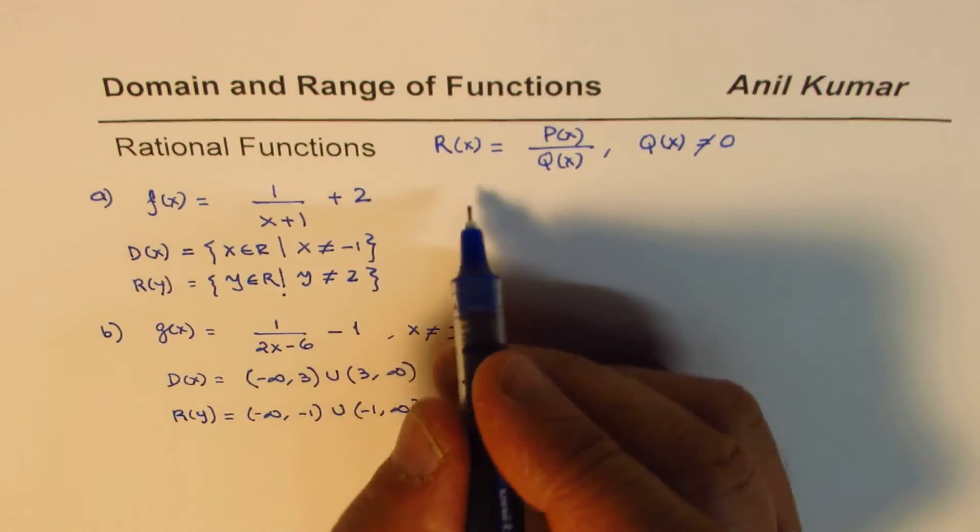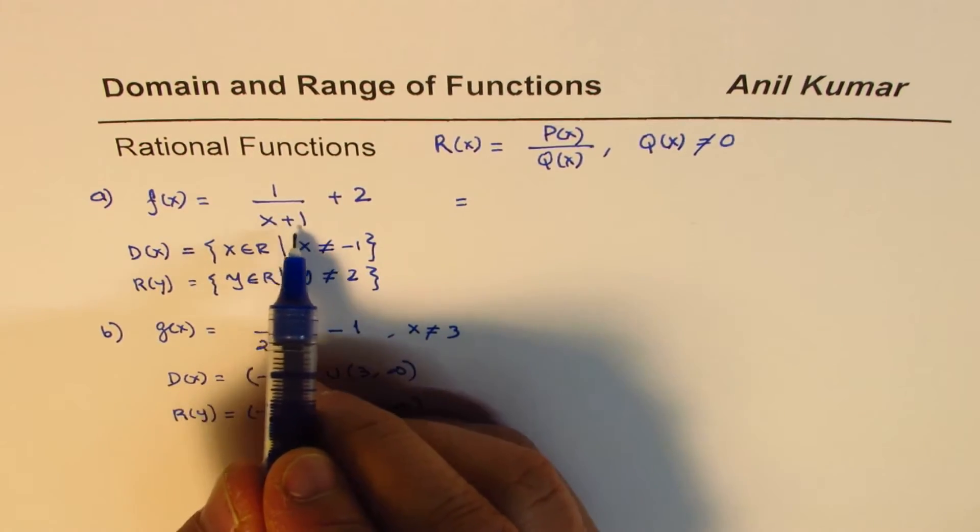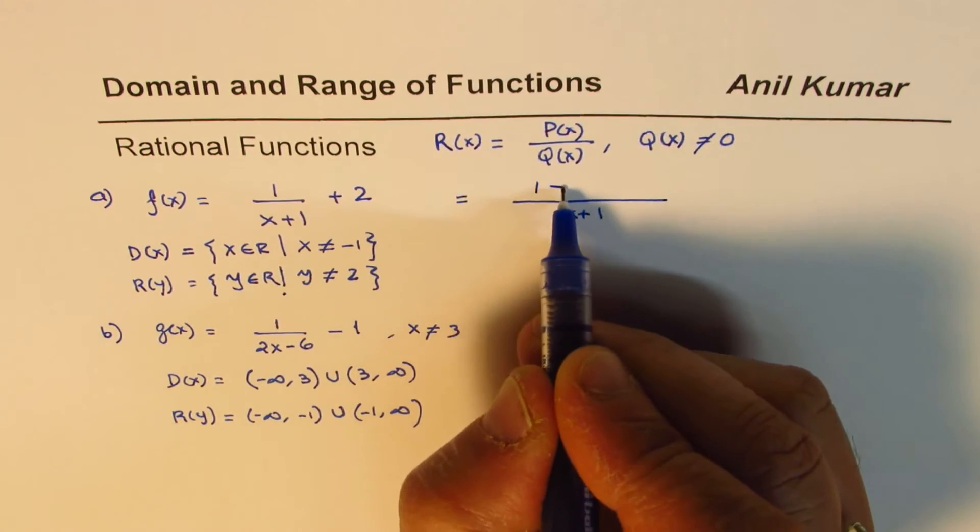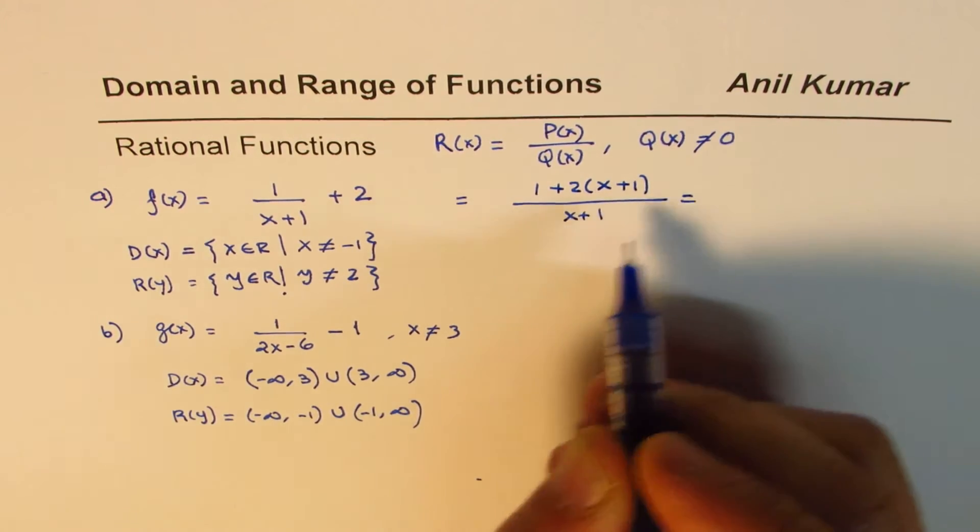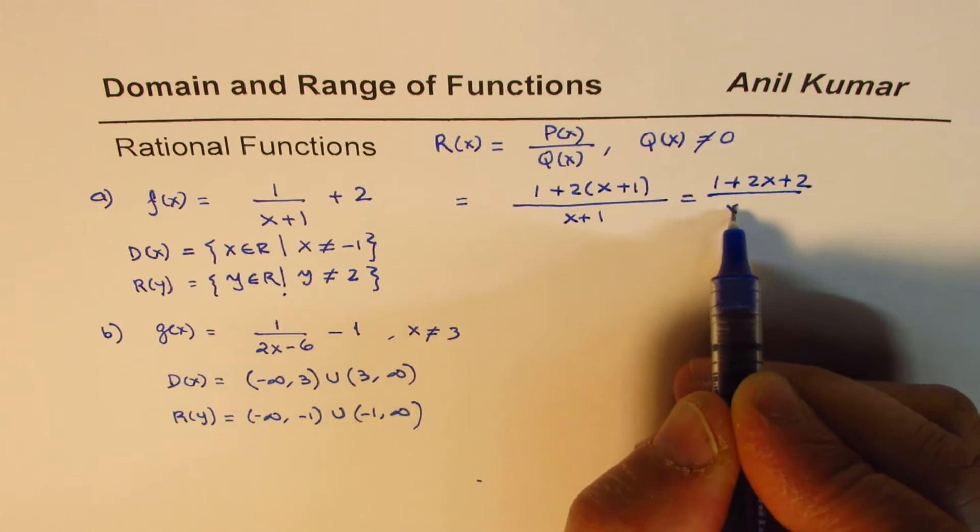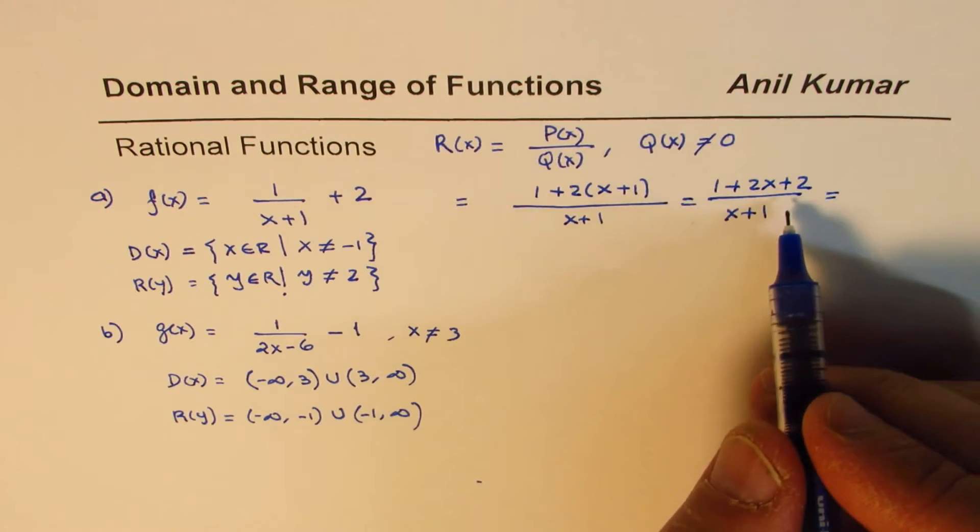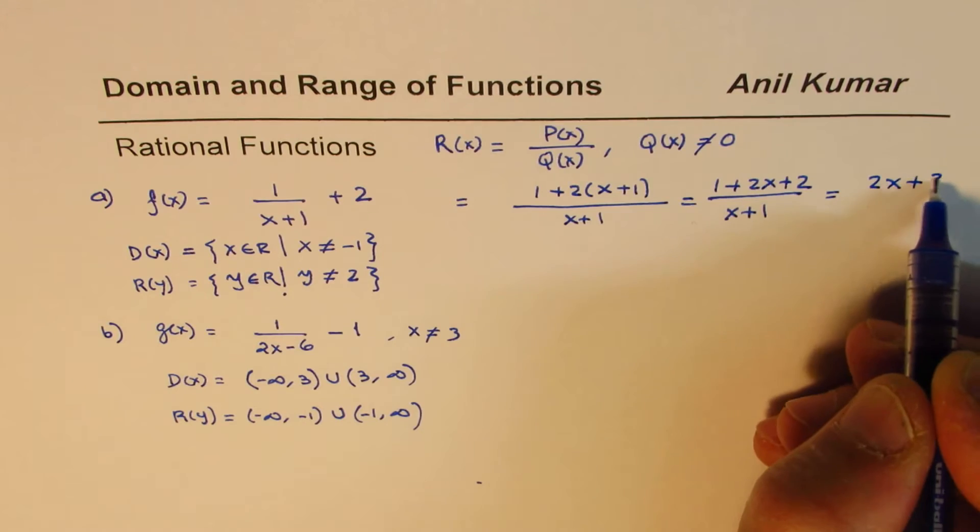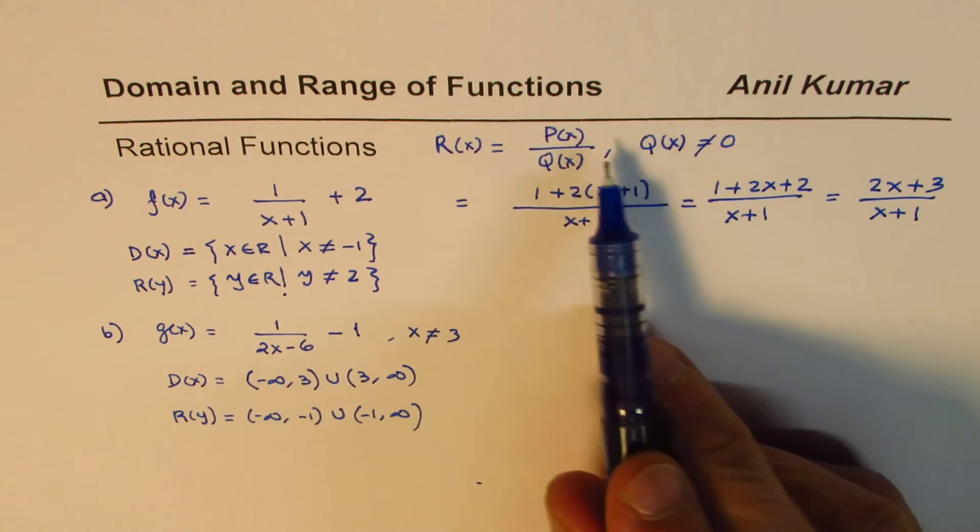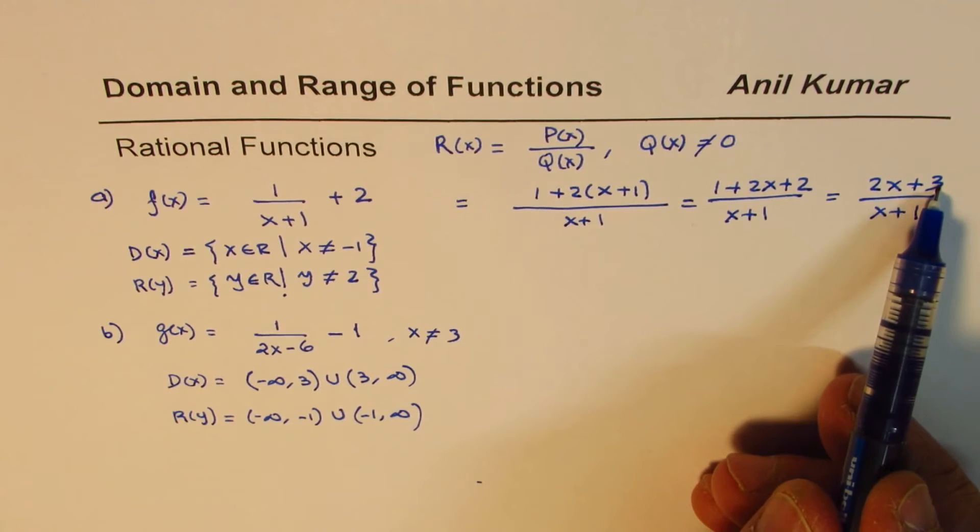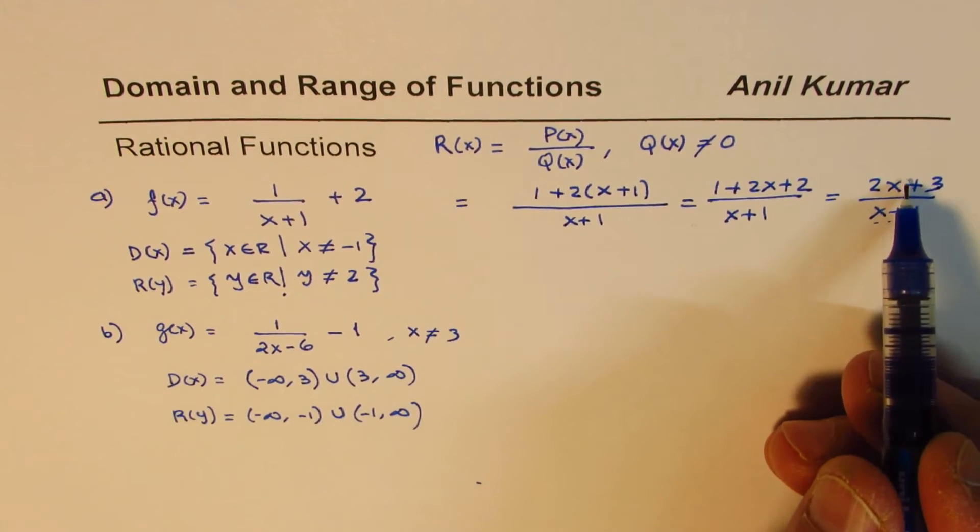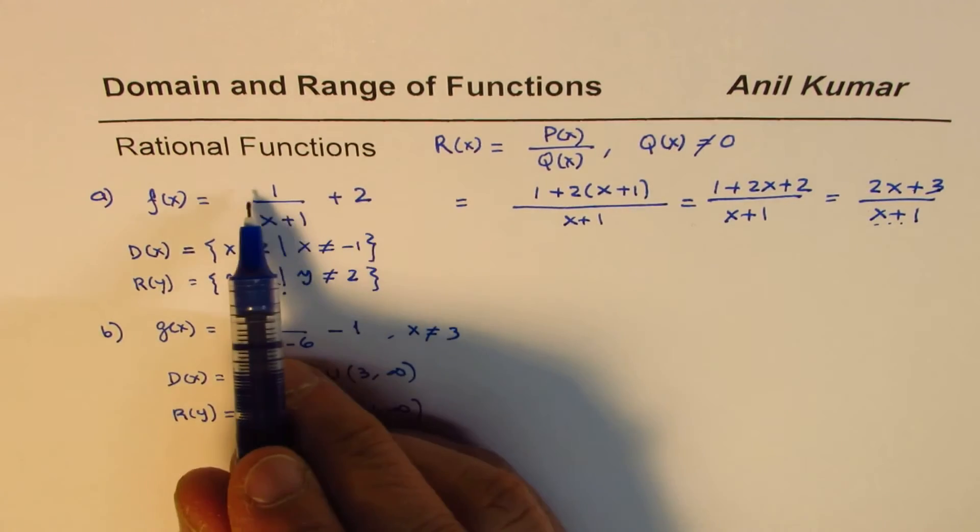Now, what I'm going to do here is rewrite this function with common denominator. I'll take common denominator of x+1. When I take common denominator of x+1, I could write this as 1 plus 2 times (x+1), correct? And that gives me, when I open this up, 1+2x+2 over (x+1), and that gives me (2x+3)/(x+1). Do you see that? So this function now has been written in this form where we have a polynomial 2x+3 in the numerator and x+1 in the denominator. That is a rational function.